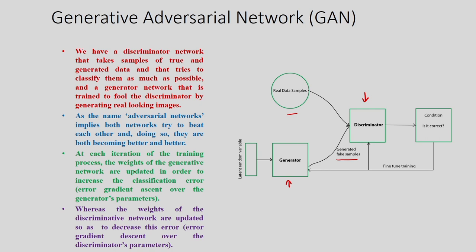At each iteration of the training process, the weights of the generative network are updated to increase the classification error, whereas the weights of the discriminative network are updated to decrease the error. So the generator's objective is to increase the classification error between the real and fake samples, while the discriminator's objective is to reduce it. That is the fundamental concept of the generative adversarial network.